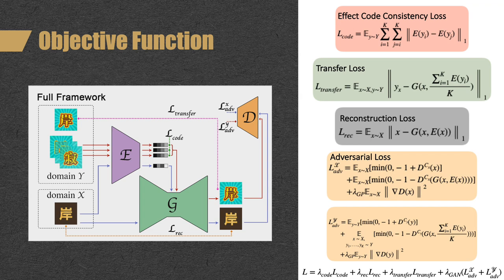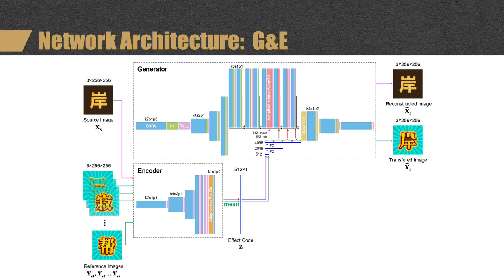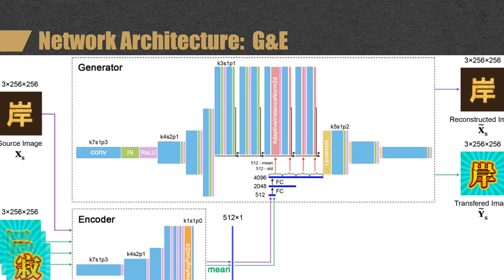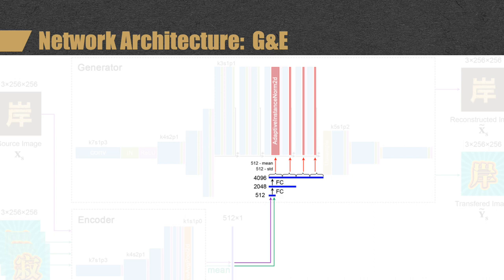For the design of the objective function, there are four parts of losses. Please refer to our paper for details. The encoder E learns the effect code from key reference samples. Inspired by style transfer approaches, we know that first-order statistics of features can represent style. Therefore, after three fully connected layers, we replace the mean and standard deviation of the features in the middle layers of the generator — an approach known as Adaptive Instance Normalization.